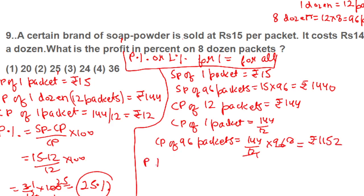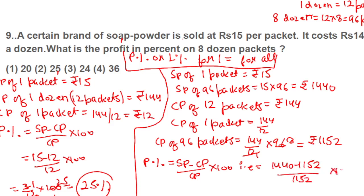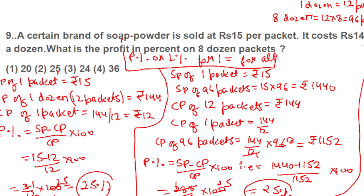Profit percent equals SP minus CP upon CP into 100. That is 1440 minus 1152 upon 1152 into 100. This comes out to be 288 upon 1152 into 100, which simplifies to 25%. So the profit percent is 25% — the same answer. This proves that profit and loss percent for 1 is equal to for all.